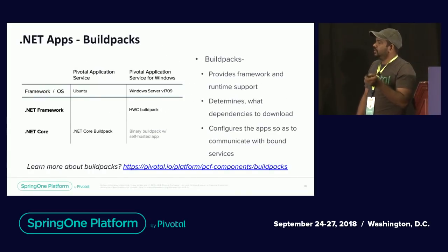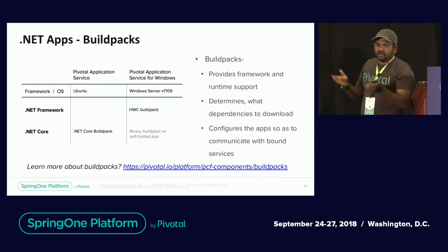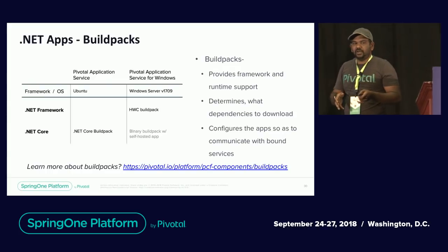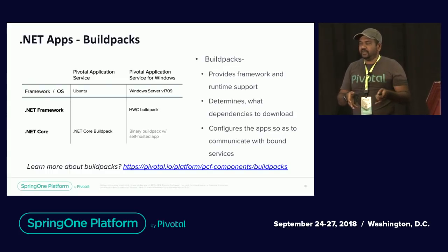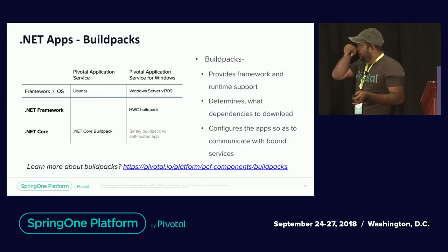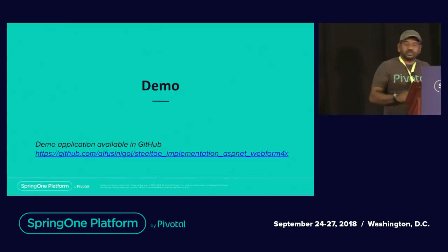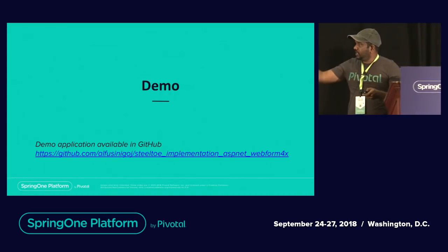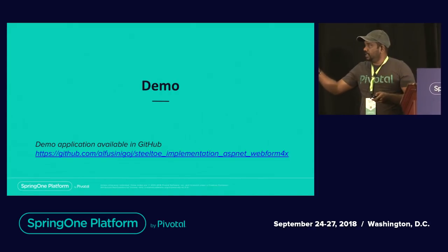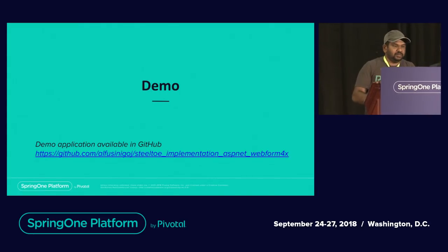For build packs, for .NET Full Framework we use HWC (Hostable Web Core) build pack. For .NET Core, use the .NET Core build pack. If your application is self-contained and runtime-contained, you can use the Binary build pack. The application code from these snippets is available on GitHub — you can look at everything we've gone through.